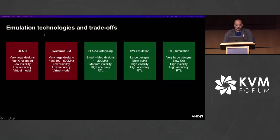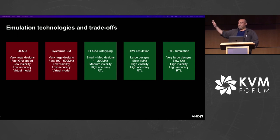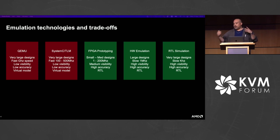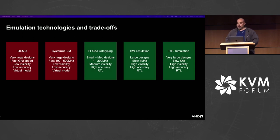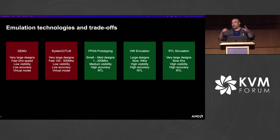Looking at the different technologies for emulation, there's a spectrum with trade-offs. Virtual technologies shown in red don't use RTL — separate models must be written. Green ones are RTL-based using real source. On the far left, QEMU has large capacity — we can emulate a full PC, all PCIe cards, even two PCs or an x86 and ARM together. It's very fast, especially in KVM mode reaching gigahertz speed, but has lower visibility and accuracy since it's not cycle accurate.